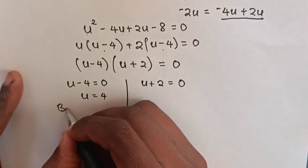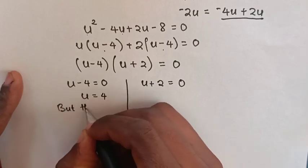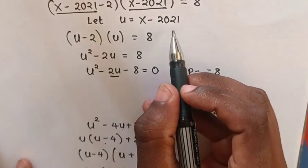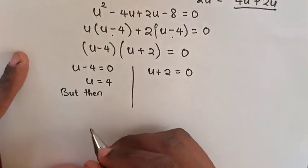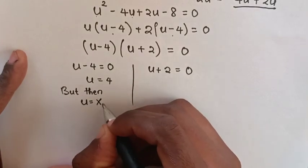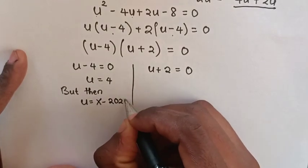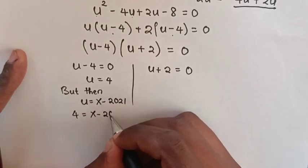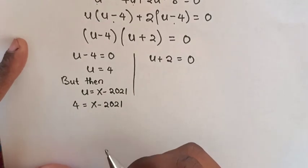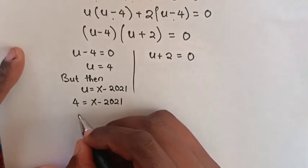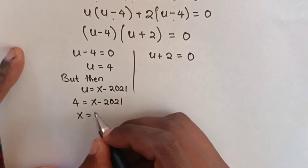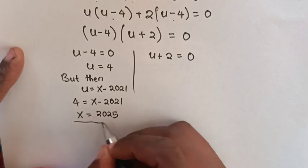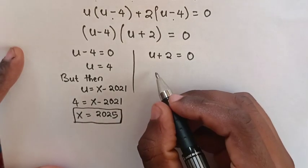But before, we let u equal to x minus 2021. So we substitute the value of u, which is 4. It will be 4 equals x minus 2021. Then we take minus 2021 to the left side, so x equals 2025. So this is one of the values of x.